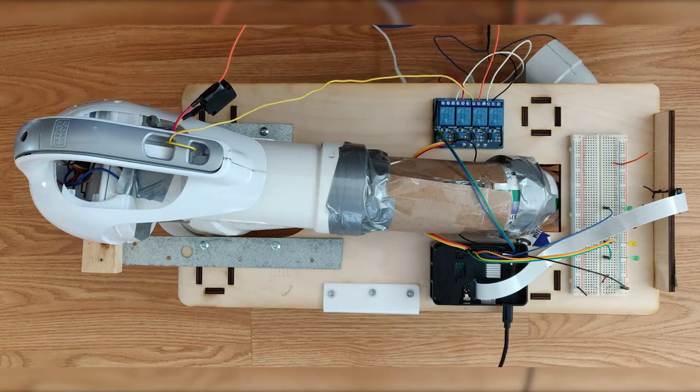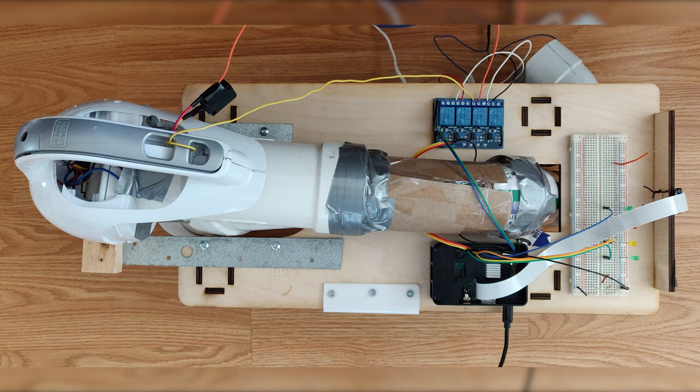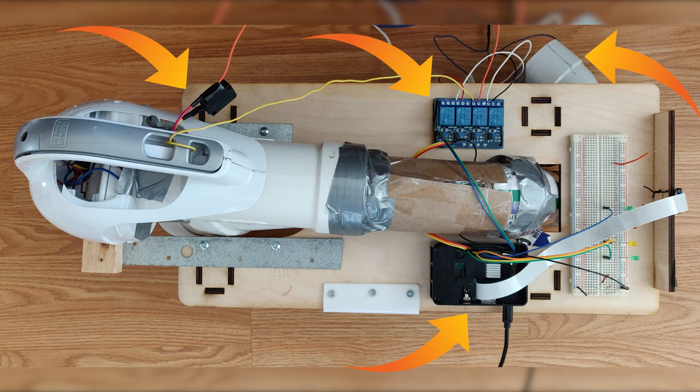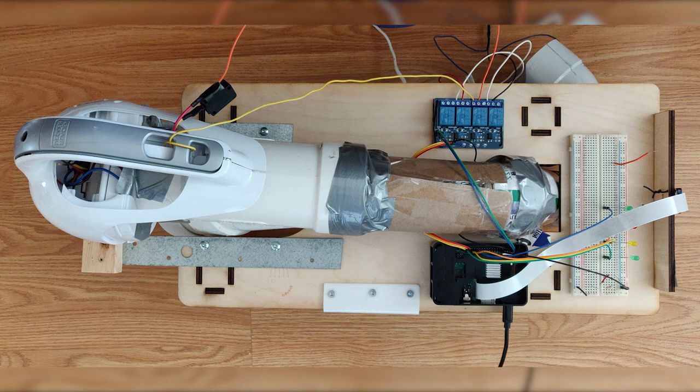After testing each individual component, we were able to integrate everything together. The Pi is connected with the vacuum motor, the isolation blower, and the orientation blower via a relay circuit. This allows the Pi to send out signals to turn each component on and off.